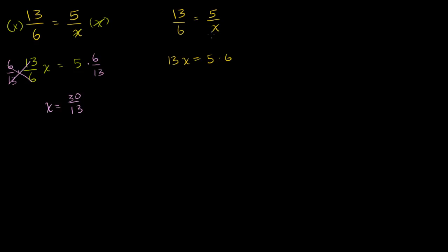It might look like magic, but really all they're doing is simultaneously multiplying both sides of the equation by both denominators. If I multiply both sides by 6x — where I got the 6 from the left denominator and the x from the right denominator — on the left side the 6 cancels, and on the right side the x cancels. So you're left with 13 times x is equal to 5 times 6. Nothing fancy — just multiplying by the denominators of both sides. Then divide both sides by 13 and you get x is equal to 30 over 13.